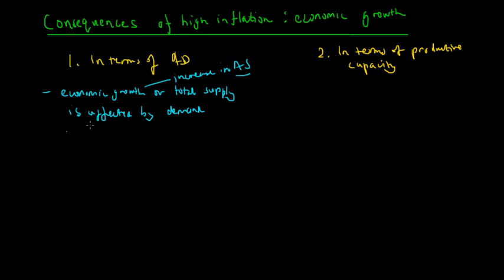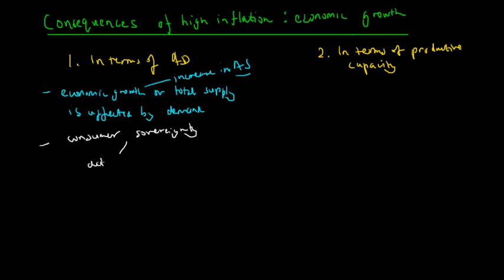So how would aggregate supply be affected by aggregate demand? In macroeconomics, the concept of consumer sovereignty should hold at the aggregate level. Consumer sovereignty is where aggregate supply is determined by aggregate demand — producers will only produce so long as there is demand for a product. So let's look at how inflation affects aggregate demand.